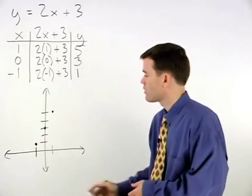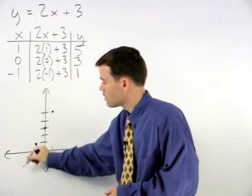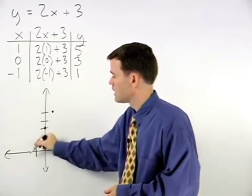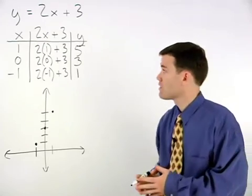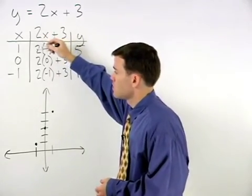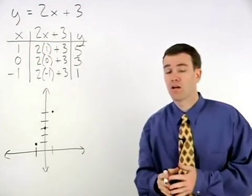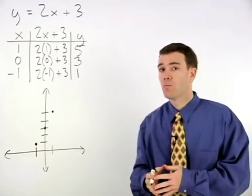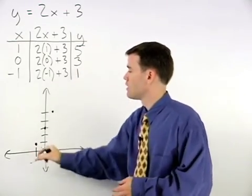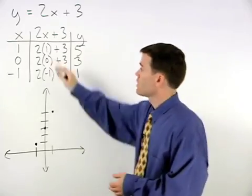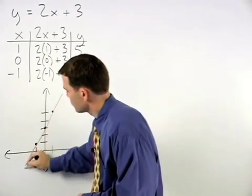Notice the pattern that is formed by these 3 points. They all lie along the same line. In fact, if we had chosen any other value to plug into the equation for x, besides 1, 0, or negative 1, we would have ended up with a different point, but that point would also lie along this line. So the graph of this equation is the line that contains these 3 points.